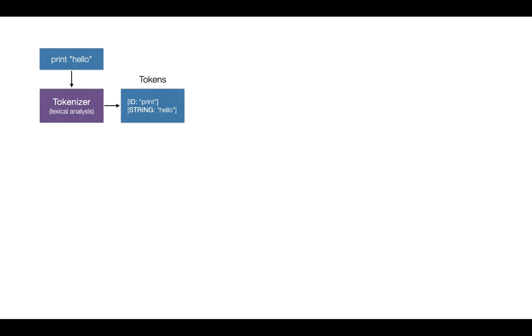Let's say we have an abstract program which prints hello. The first module which processes our program is known as the tokenizer — sometimes called lexer or scanner — and it defines the lexical analysis. The purpose of the tokenizer is to group individual characters into a recognizable stream of tokens. As you can see, we scan two tokens: an identifier with the value 'print', and a string with the value 'hello'. The purpose is to group characters into higher-abstracted entities, since it's more convenient to work with tokens versus individual characters.